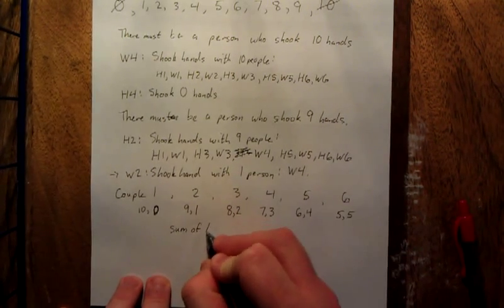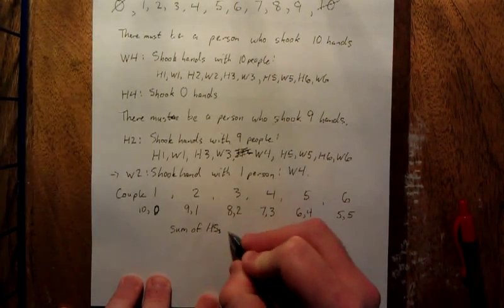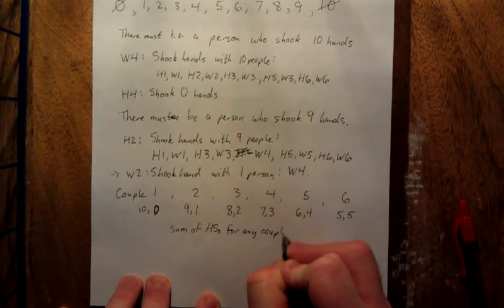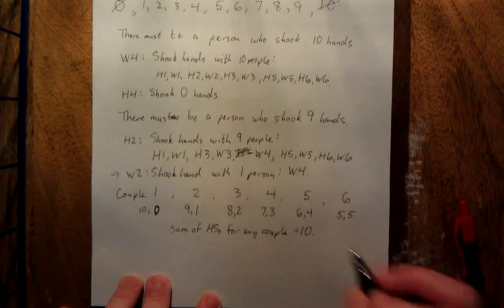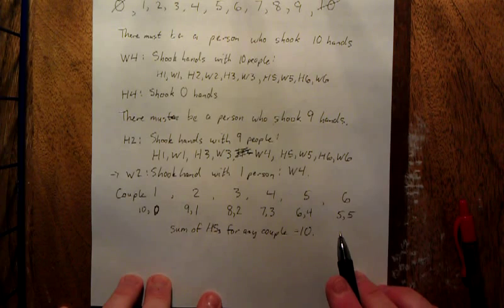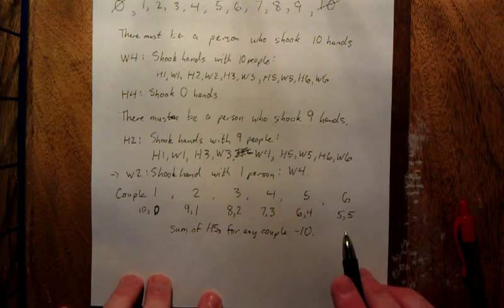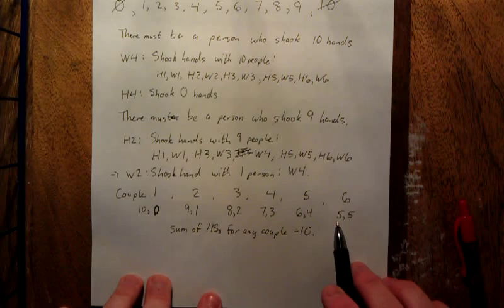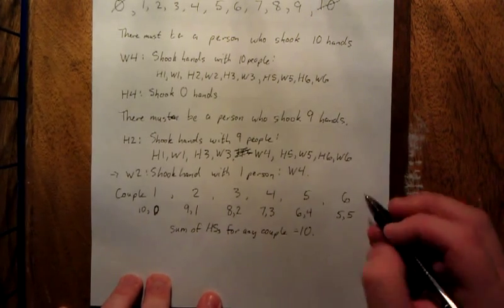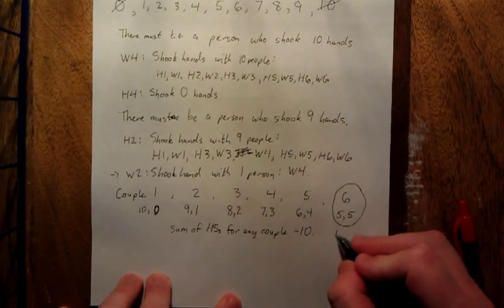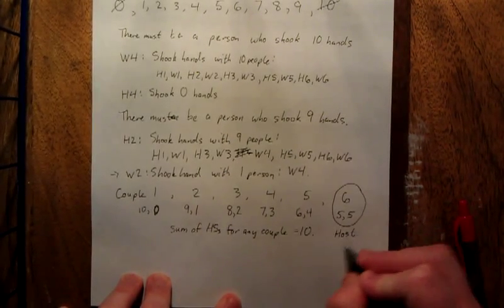Now this last one seems like a contradiction, because we said at the beginning of the problem that the host asks everybody else with how many people did you shake hands, and he got 11 different responses - not the same response. The only way that this is possible is if the last one that you take a look at is the host and the spouse.